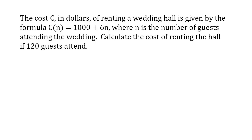The answer to this question is 1720. The cost C in dollars of renting a wedding hall is given by the formula C of N equals 1000 plus 6N, where N is the number of guests attending the wedding. Calculate the cost of renting the hall if 120 guests attend.